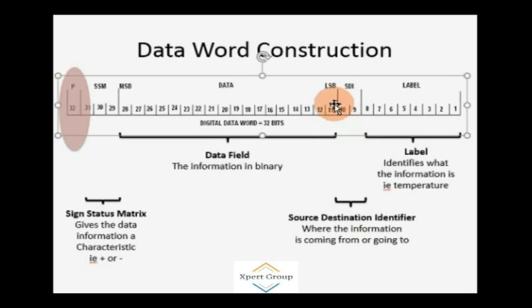From here to here is the digital data word which contains the data. This is basically data information in binary conditions. The sign/status matrix gives the data information a characteristic, whether it is positive or negative.